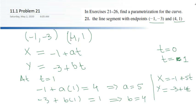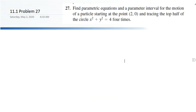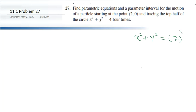Now let's go to the next problem. Here we have to find a parametric equation and a parametric interval for the motion of a particle starting at the point (2, 0) and tracing the top half of the circle x² + y² = 4. We have a circle x² + y² = 2², which means the radius is 2.